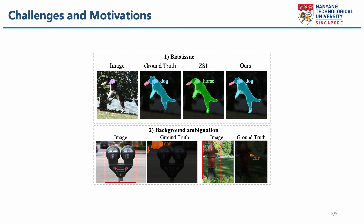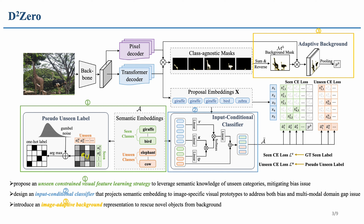To solve the above challenges, we propose our approach D2-0. First, we propose an unseen-constrained visual feature learning strategy to leverage semantic knowledge of unseen categories, mitigating the bias issue. Second, we design an input conditional classifier that projects semantic embeddings to image-specific visual prototypes to address both bias and cross-modal domain gap issues. Finally, we introduce an image-adaptive background representation to rescue novel objects from background.